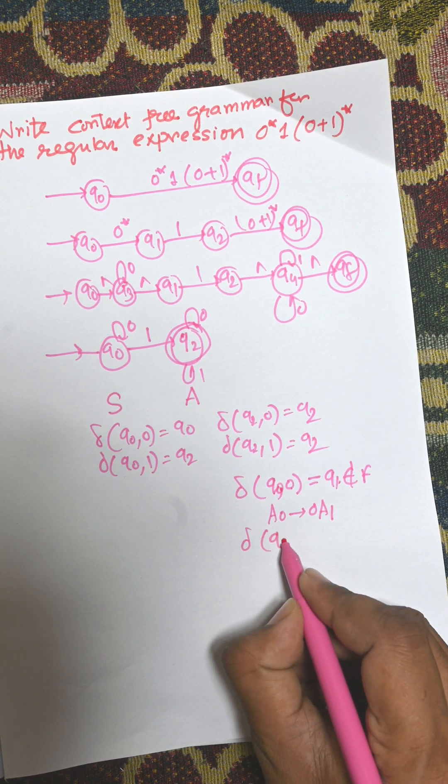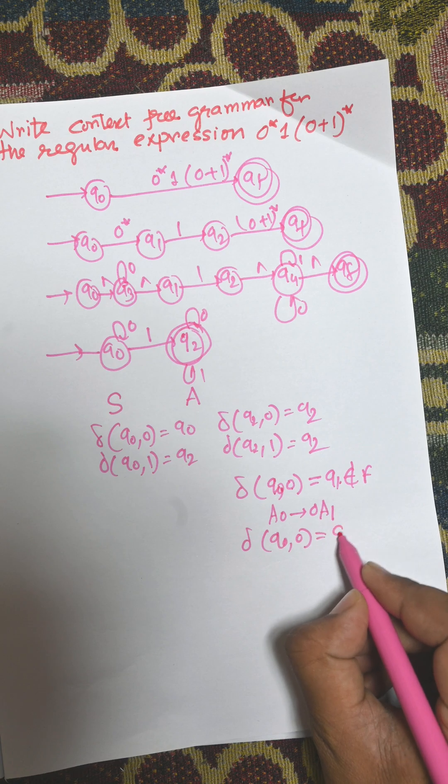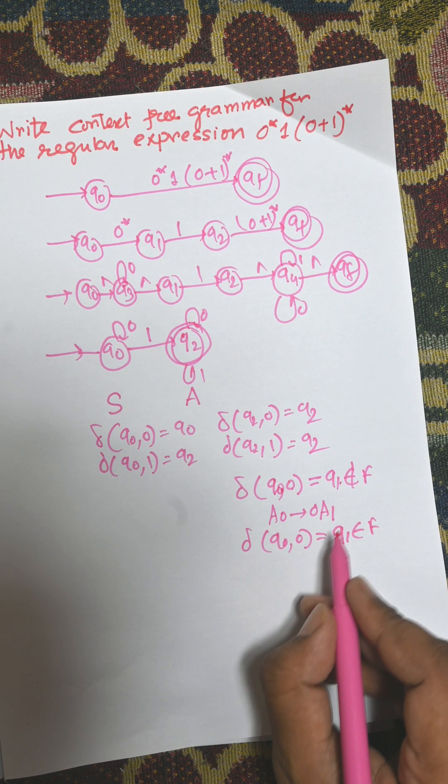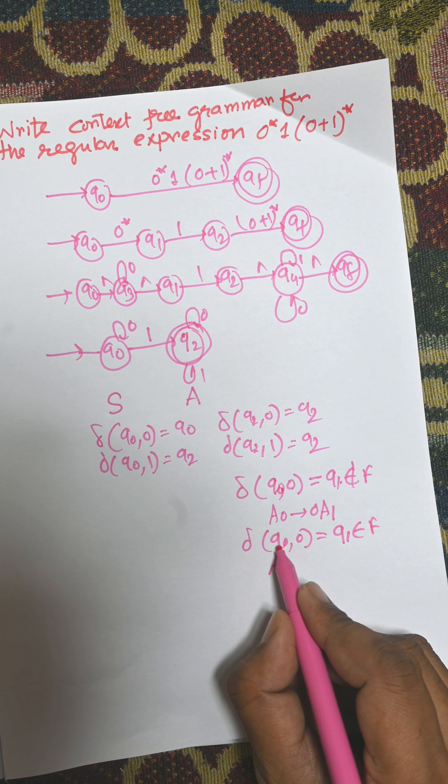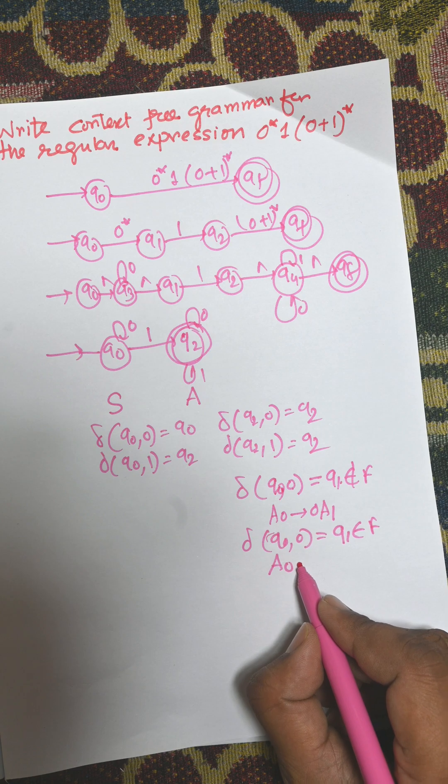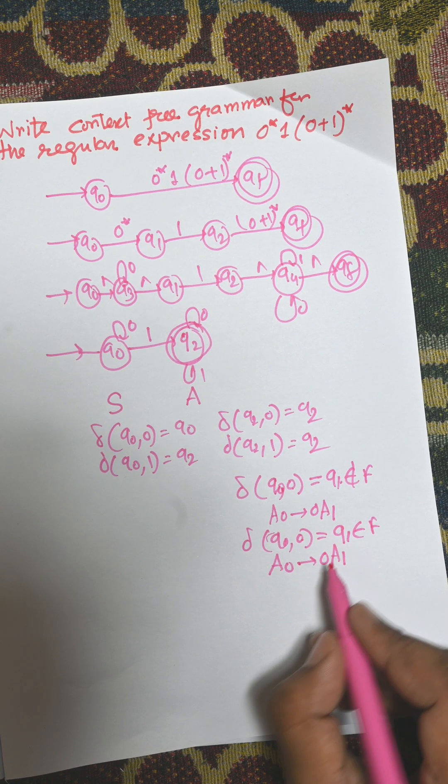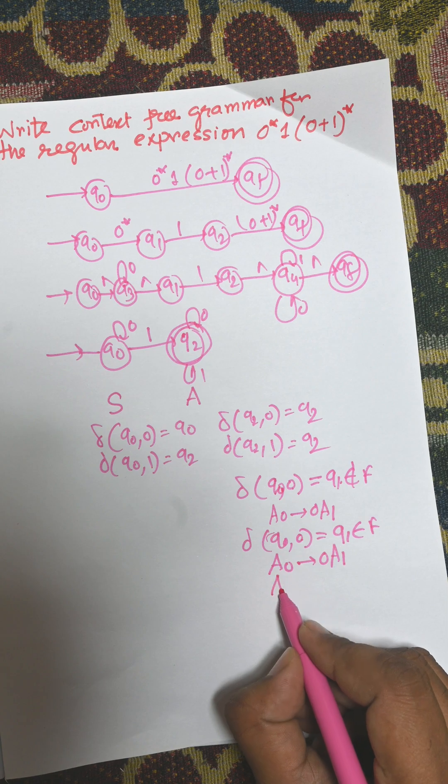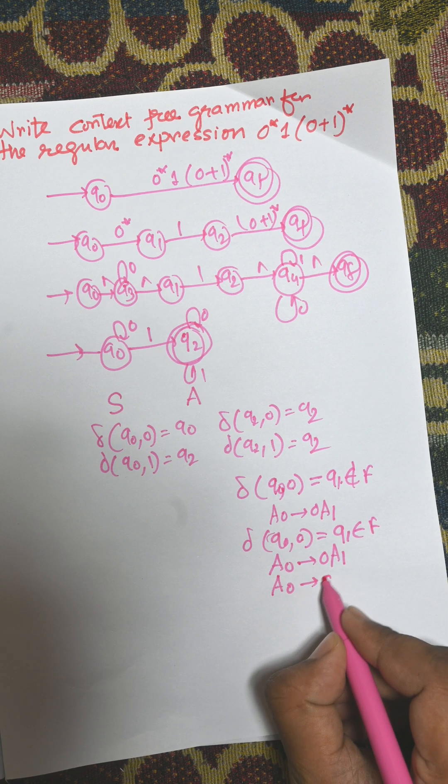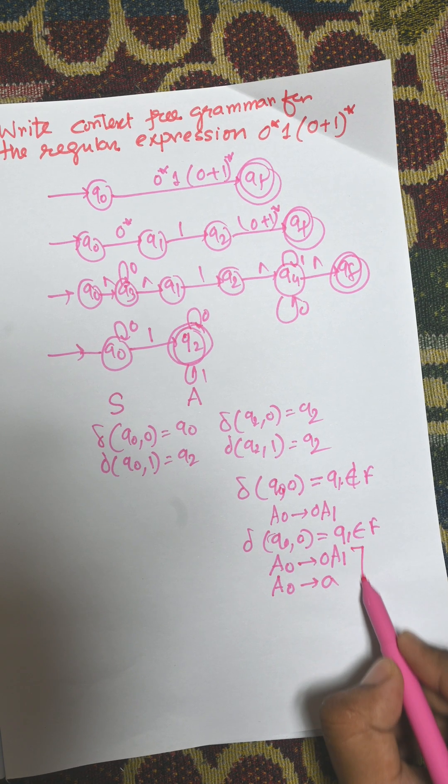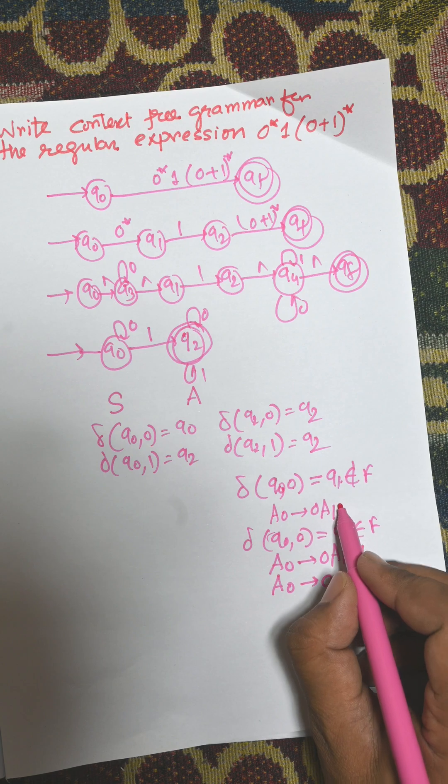If this belongs to a final state, then we need to consider Q0 as A0 and then 0 to A1. Q1 consider as A1, or we need to consider another production A0 to epsilon. So for a final state there are two productions, for a non-final state there is only one production.